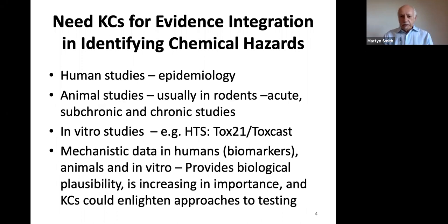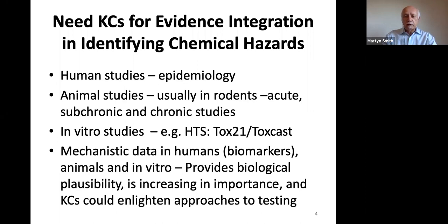Why do we need key characteristics? We need them for evidence integration in identifying chemical hazards. Typically we use three streams of evidence: first, human studies — mostly epidemiological studies; second, animal studies, usually in rodents; and third, mechanistic data, which can come from humans, animals, or in vitro studies. We have an increasing amount of high-throughput screening approaches and in vitro studies providing information, as well as biomarkers in humans, so this mechanistic data is becoming increasingly important.